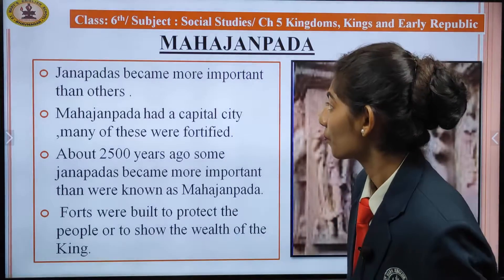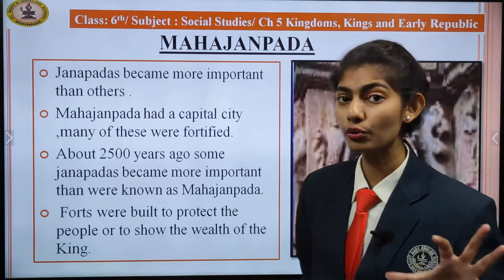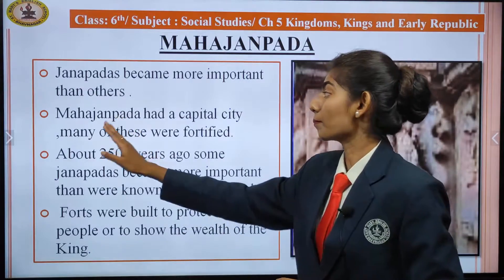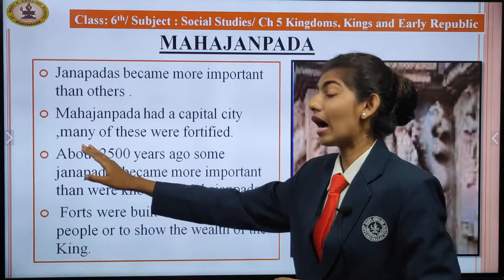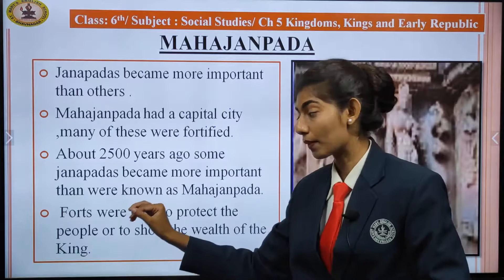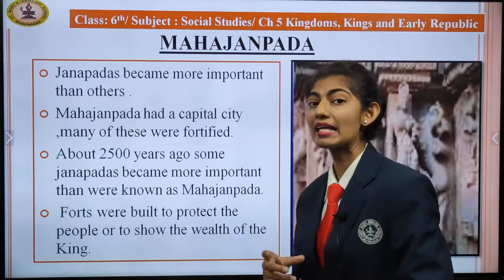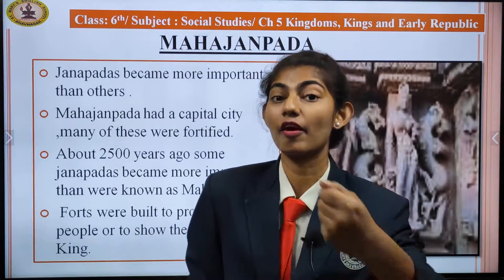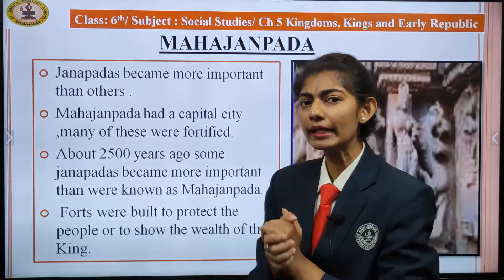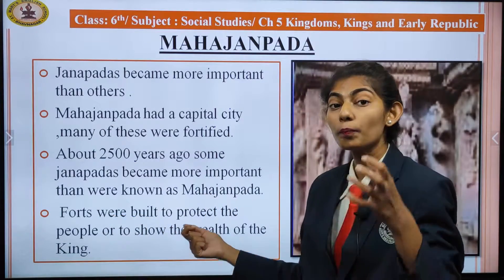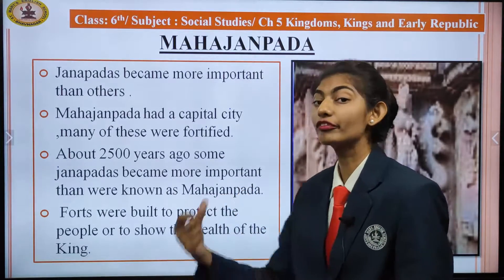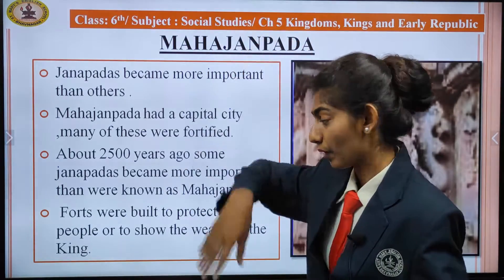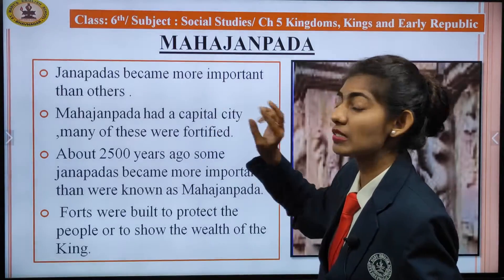Some Janapadas became more powerful than others and were known as Mahajanapadas. About 2500 years ago, some Janapadas became more important, stronger, and powerful. There were 16 Mahajanapadas in total. Each Mahajanapada had a capital city and many of these were fortified. Forts were built to protect the people and to display the wealth of the king, with very large walls constructed around them.